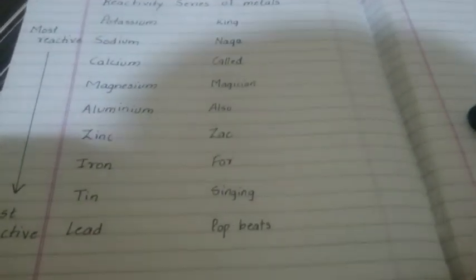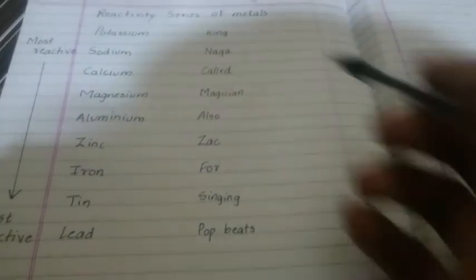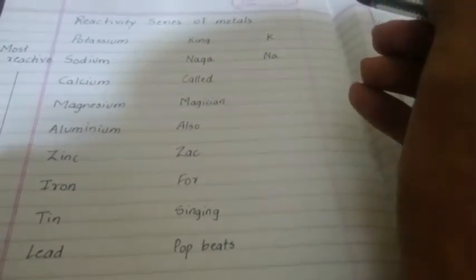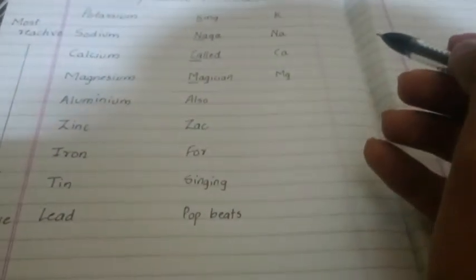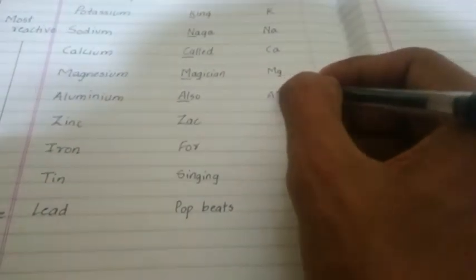After the sentence we'll take out its initials. For king we'll take out K, that becomes potassium. For naga we take out Na, that becomes sodium. For called you take out Ca making it calcium. For magician Mg, that goes for magnesium. For also take out Al to make it aluminium.